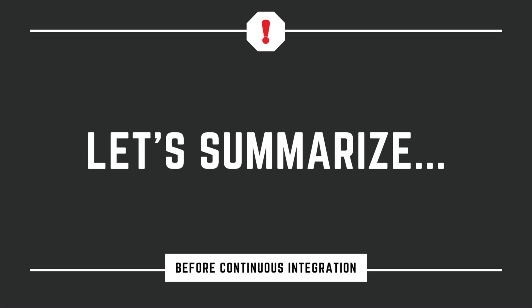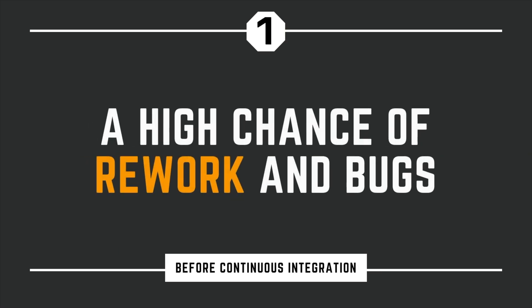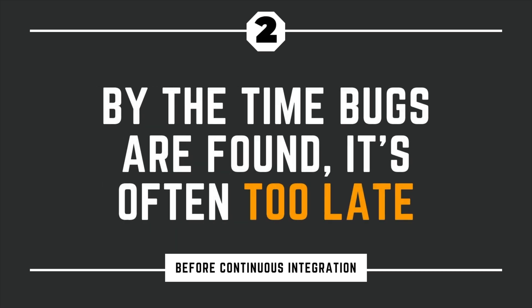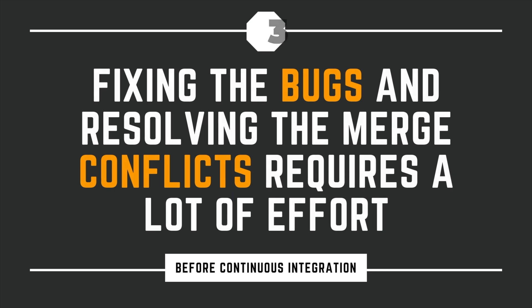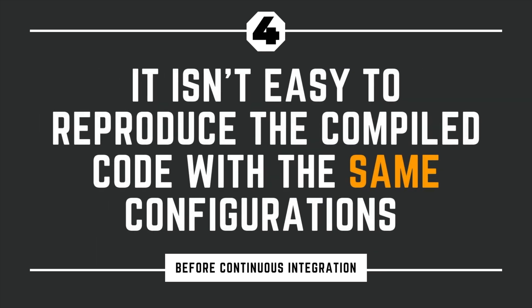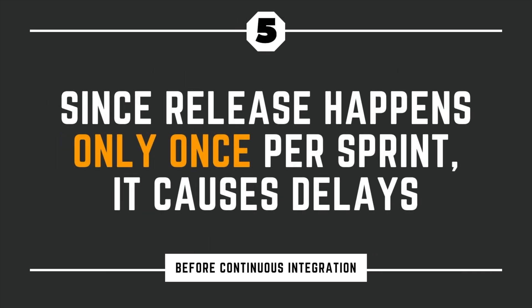On top of this, the integration team can only deliver the final compiled code to the operations team once every sprint, causing lots of delays and often resulting in the code not being deployed to production until it is fixed in a subsequent sprint. To summarize, with the current integration process we have: number one, a high chance of rework and bugs; number two, by the time bugs are fixed, it's often too late; number three, fixing bugs and resolving merge conflicts requires a lot of effort; number four, it is not easy to reproduce the compiled code with the same configuration as the production environment; and number five, since release happens only once per sprint, it causes delays.